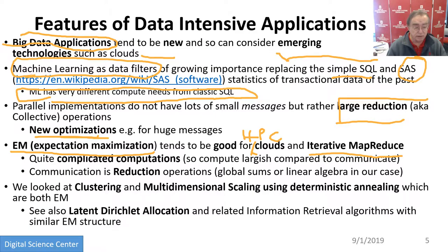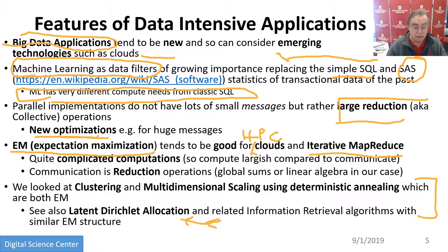The critical issue is these machine learning methods need computing, whereas SQL doesn't. We have lots of activities on clustering and dimension reduction, which is multidimensional scaling, and latent Dirichlet allocation, which is a particularly hard algorithm used effectively by Google News to take a wide range of web documents and extract and classify information into related topics.